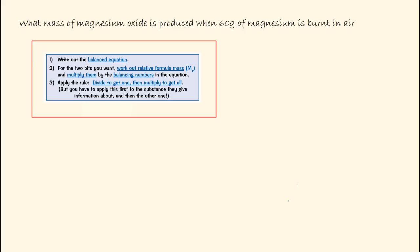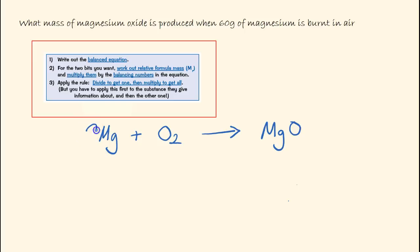We're going to look at one example and apply both methods. The question is: what mass of magnesium oxide is produced when 60 grams of magnesium is burnt in air? The first thing to do is to write a balanced chemical equation. We have magnesium plus oxygen goes to make magnesium oxide, balanced with a 2 in front of the magnesium and a 2 in front of the magnesium oxide.